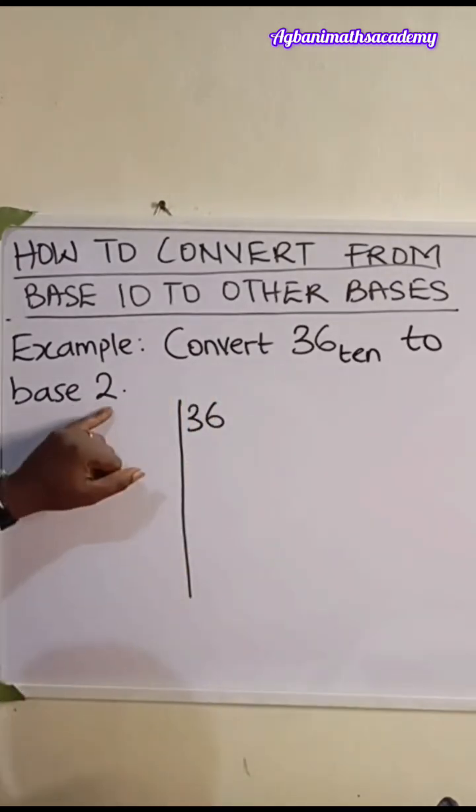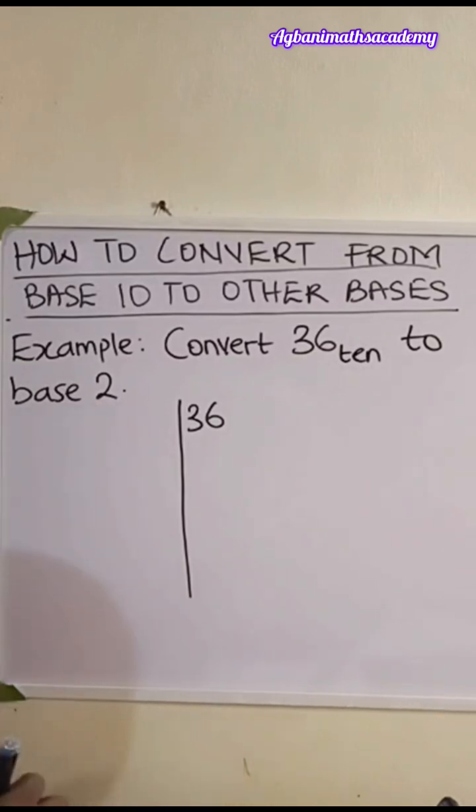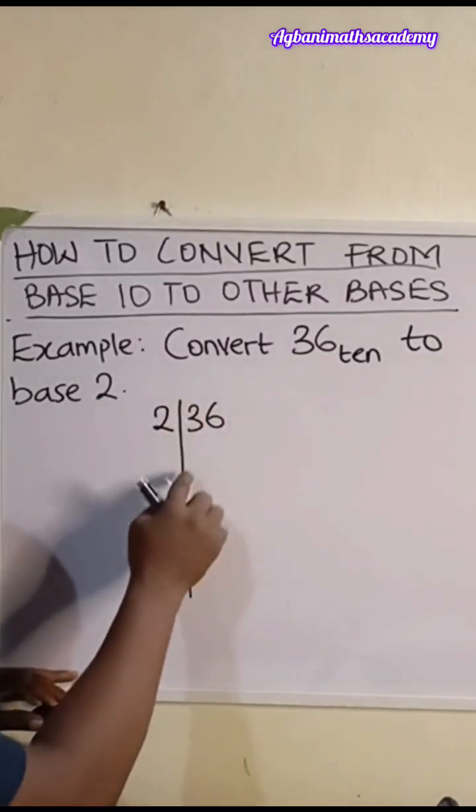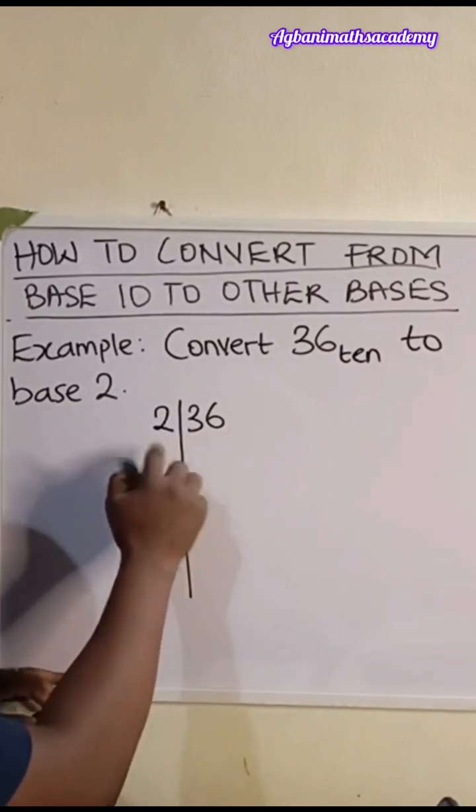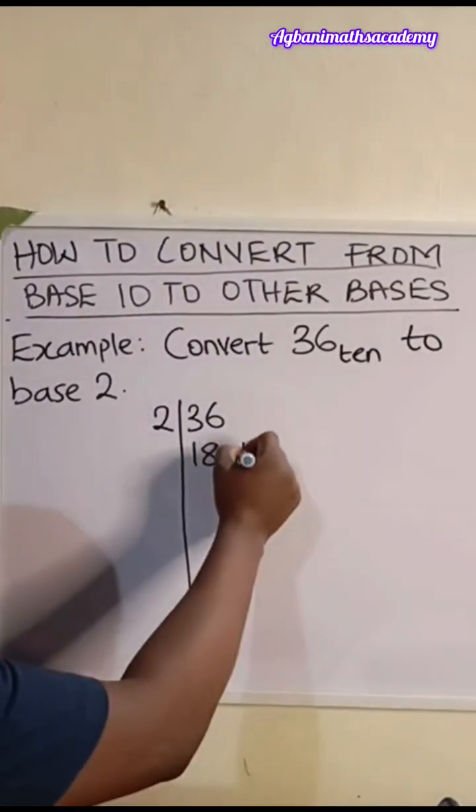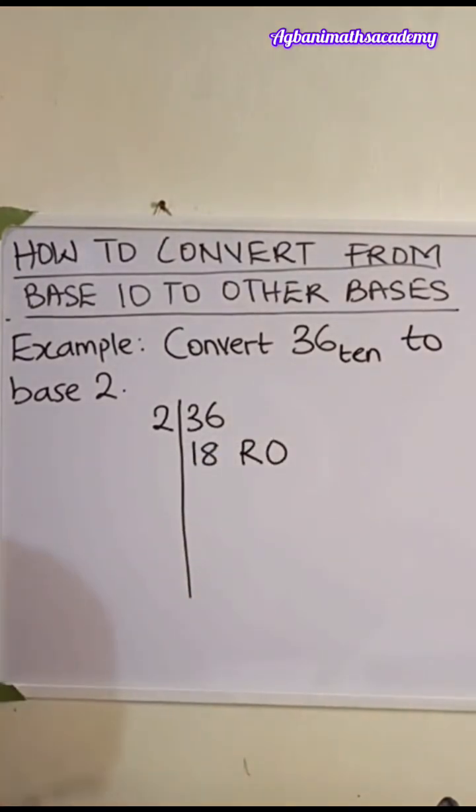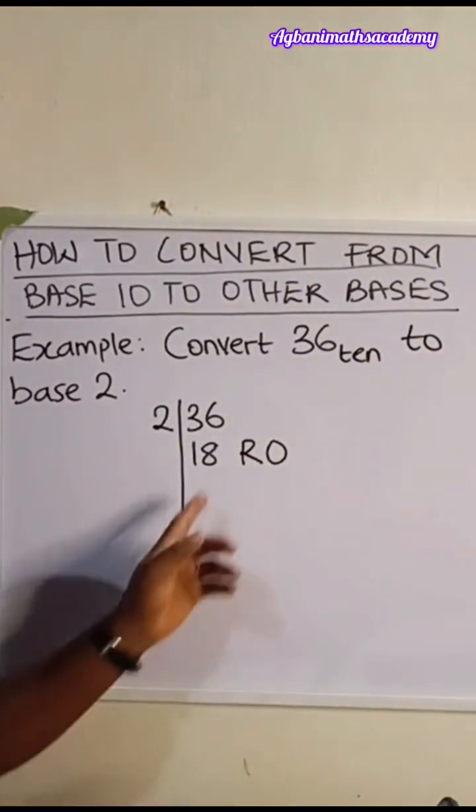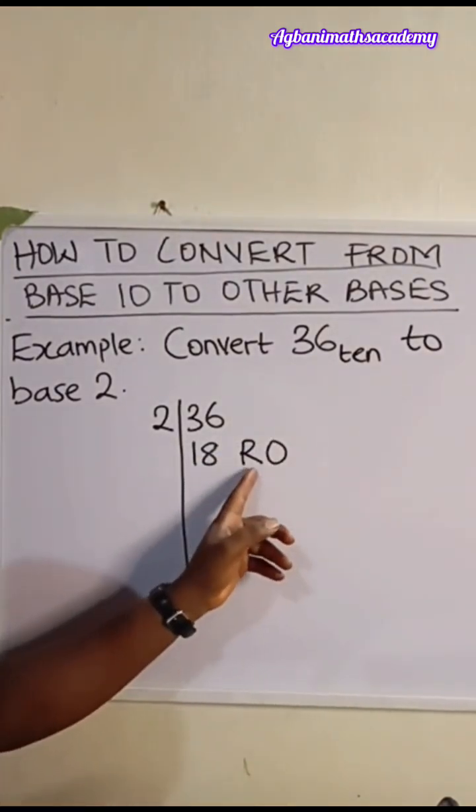Let's divide by 2. We are going to be dividing by 2 because we are converting to base 2. 36 divided by 2 is going to give us 18. Will there be any remainder? No remainder. So we have remainder 0.